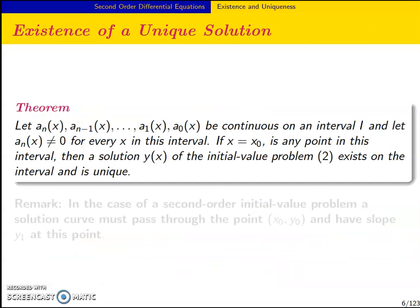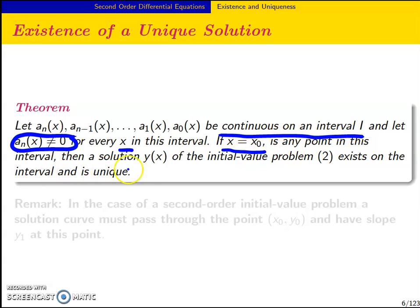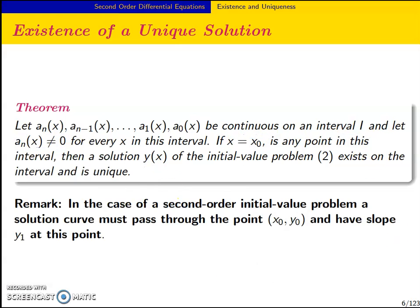We want to check whether the solution exists. If the constants a_n, a_{n-1}, ..., a_1, a_0 are continuous on an interval I, and provided that the leading coefficient a_n is not equal to zero for every x in the interval, then with x0 as any point in the interval, the solution y(x) of the initial value problem exists on the interval and is unique. For a second order IVP, a solution curve must pass through the point (x0, y0) and have slope y1 at that point.